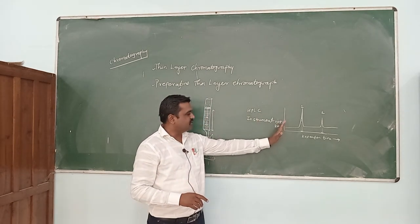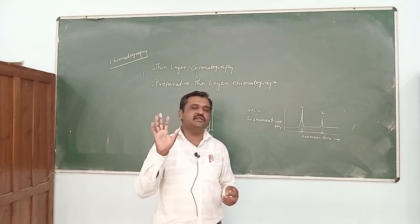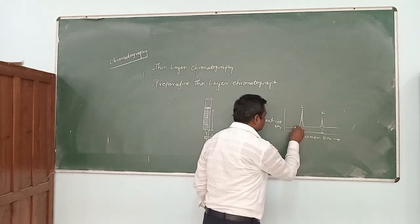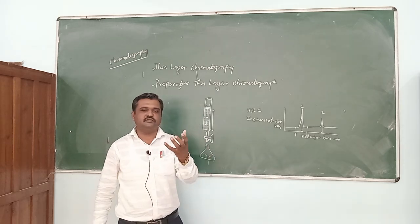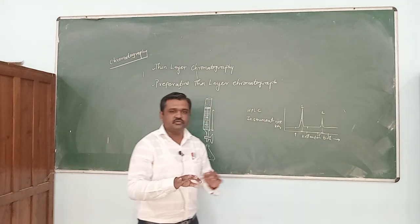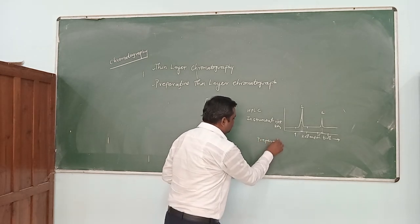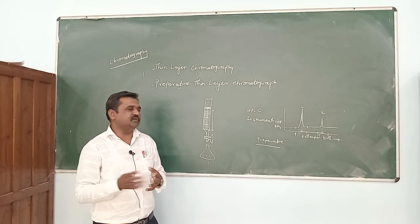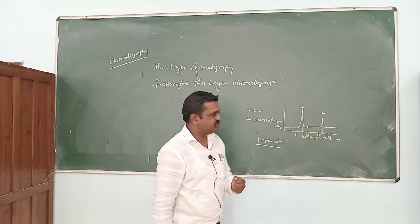The same way, HPLC can be used as preparative HPLC, where the instrument is very different. About 5 to 10 grams of sample can be injected at a time and we can get pure components. If the retention time of a substance is supposed to be 9 to 10 minutes, the fraction collected from 9 to 10 minutes will be collected separately. If another component elutes at 15 to 16 minutes, it will be collected separately. Thus, we get two components in a pure state, and HPLC is also used as a preparative technique.